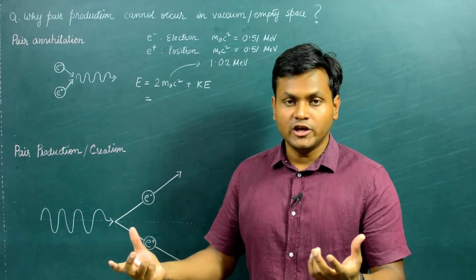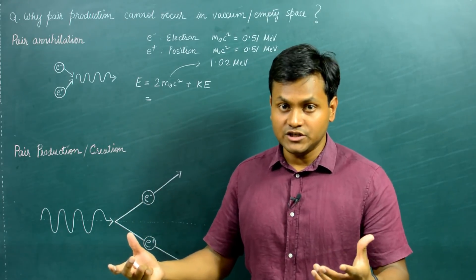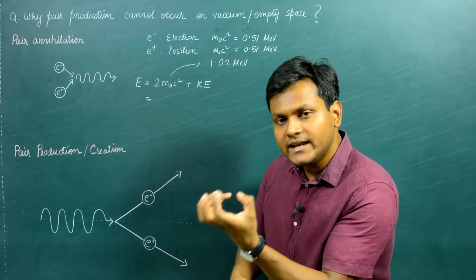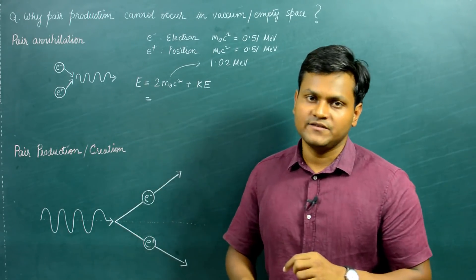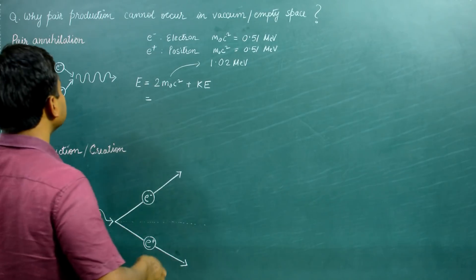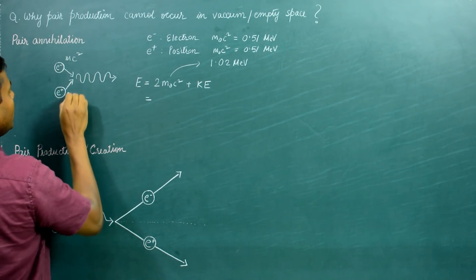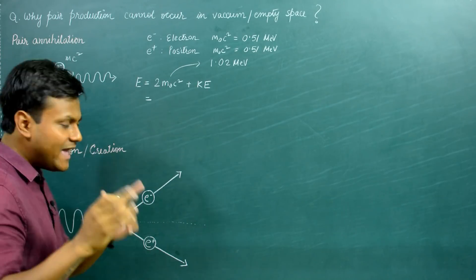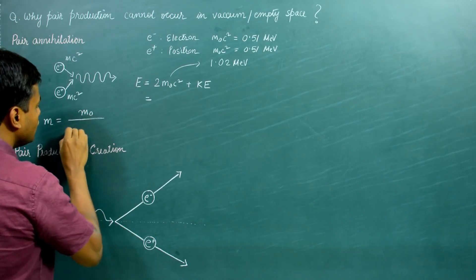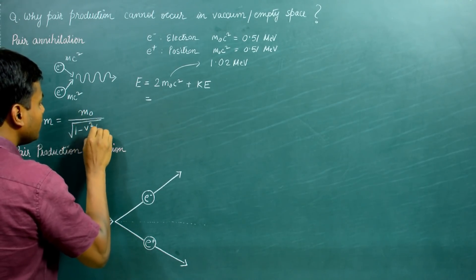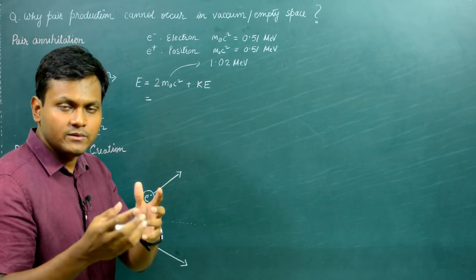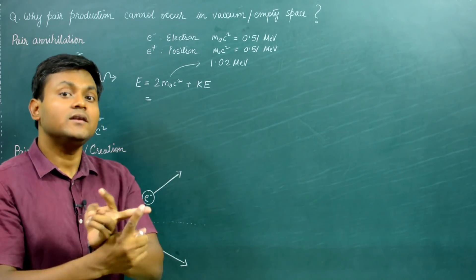Mass and energy are equivalent — where there is energy there is mass, and where there is mass there is energy. When a particle is at rest, its mass has an energy; when the particle is moving, the kinetic energy is reflected as an increase in its mass. So for a particle in motion, the total amount of energy can simply be written as mc², where m is the relativistic mass, not the rest mass.